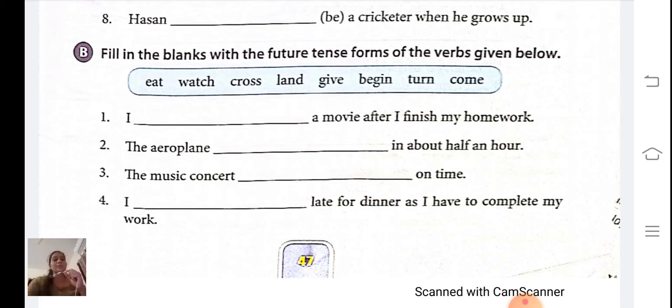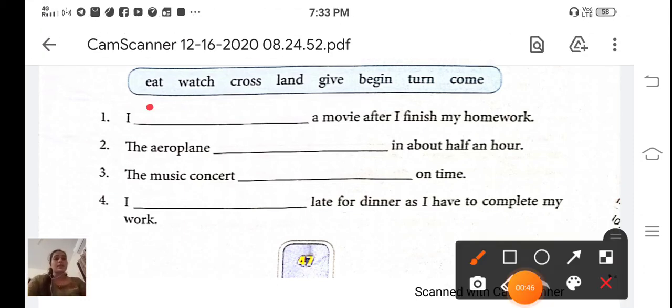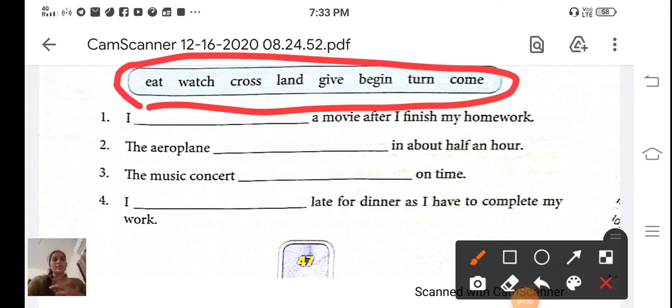First one. I dash a movie after I finish my homework. So let's see. You can see here students, we have a helping box here. Which verb is suitable for this sentence students? What we do with movie? Yes, we watch. So the answer is, I will watch a movie after I finish my homework.